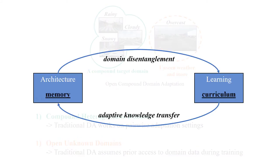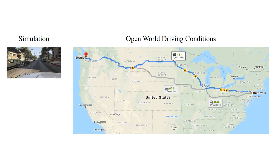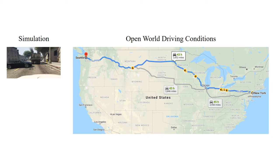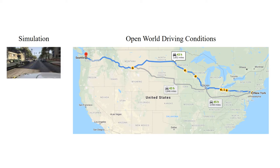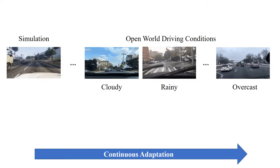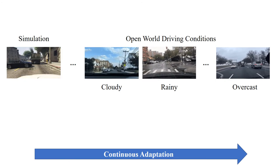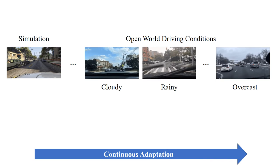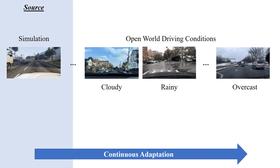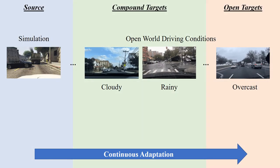Here we also present an effective solution to this task, consisting of domain memory in architecture and instance curriculum in learning. Getting back to the trip from New York City to Seattle, the self-driving car trained on simulation needs to continuously adapt to open-world driving conditions, from source to compound to open.